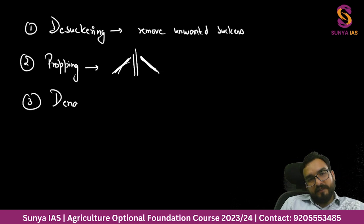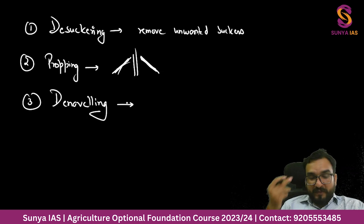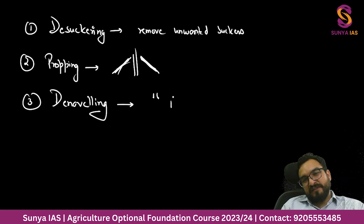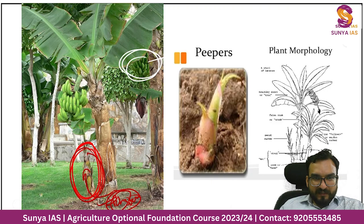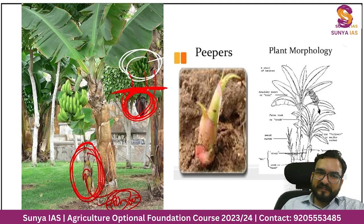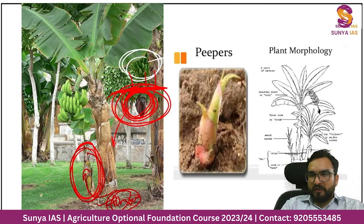One more practice is de-naveling. De-naveling is the removal of the male bud after pollination - after the male has done its work, it is removed. The male bud, if left attached, continues to consume nutrients and water. So to cut the competition for resources, this male bud is cut down. This is called de-naveling in banana cultivation terminology.